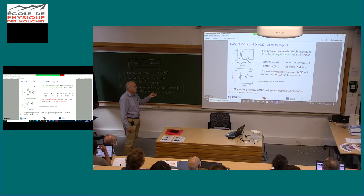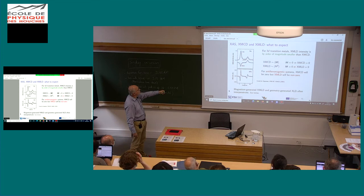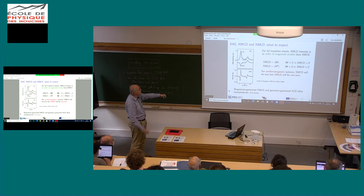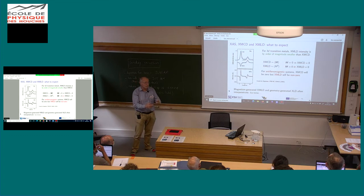A typical XMLD spectrum: this is the dichroic absorption spectrum and linear dichroism XMLD on iron. The typical shape of the XMLD spectrum has one peak and another peak, and it is kind of a derivative of the XMCD spectrum. The magnitude of XMLD is about an order of magnitude smaller than XMCD, so you have to be more careful when measuring XMLD. More importantly, XMCD is proportional to the magnetization, so if the total magnetization is zero — for example in an antiferromagnetic system — you do not get any XMCD signal.